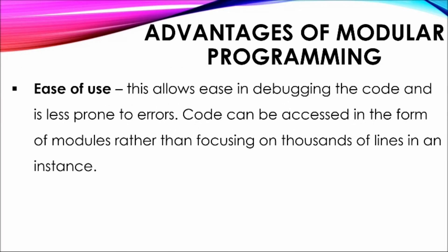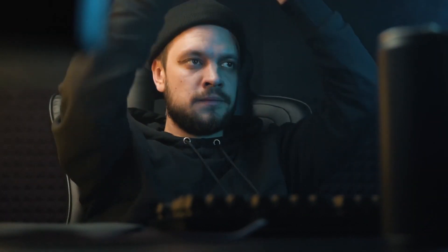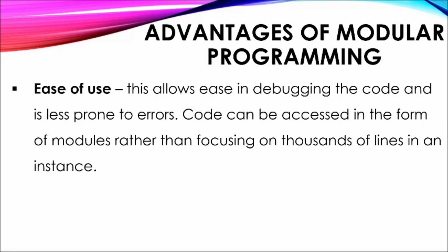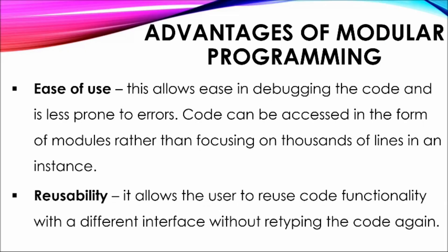Advantages of modular programming: Ease of use — allows programmers or developers to debug code based on functionality. This allows code to be accessed and corrected based on the actions of a module, rather than focusing on thousands of lines within a program. This saves time and allows deeper focus. Reusability — allows the developer to reuse code functionality within different aspects of a program without having to retype specific lines of code.